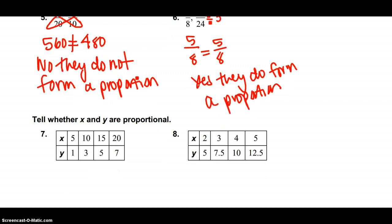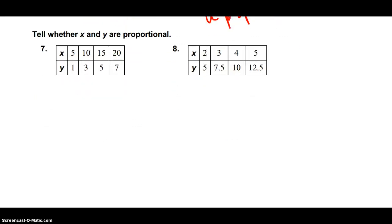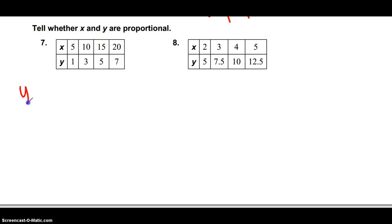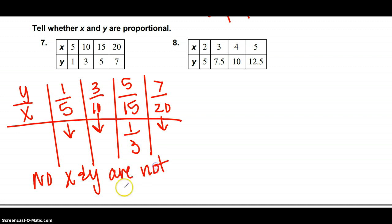On 7 and 8, this problem looks a little funky. You will not see something like this on your test exactly like this. So don't get too freaked out if you're not familiar with this format. Basically, remember when we did this y over x table? So that y over x is 1 over 5, this one's 3 over 10, this is 5 over 15, and 7 over 20. You need to simplify all four of these and see if you get the same simplified version. Well, 1 5th is already simplified, 3 10ths is already simplified, 5 over 15 can be 1 3rd, and 7 over 20 is already simplified. So no, x and y are not proportional. If they were proportional, all of the simplified versions would be equal to each other.